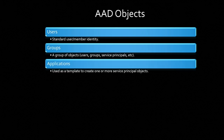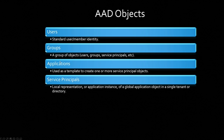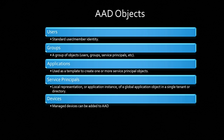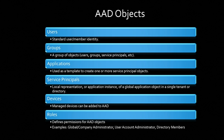Applications are used as templates to create service principal objects. We'll talk more about that later. Then we have service principals, which is a local representation or instance of an application within a single tenant. We have devices — managed devices that can be added to Azure Active Directory. And finally, we have roles, which are permissions for AAD objects — for example, global or company administrator, user account administrator, directory members.